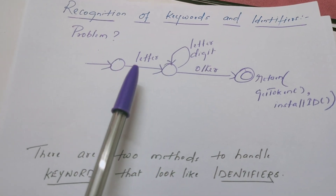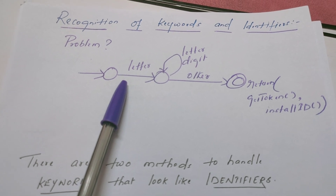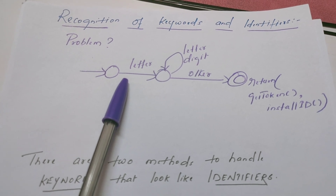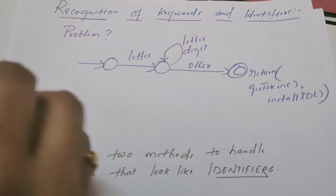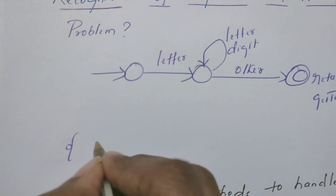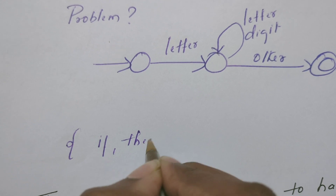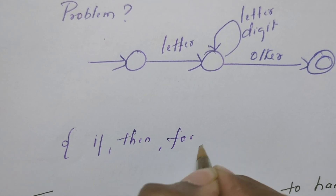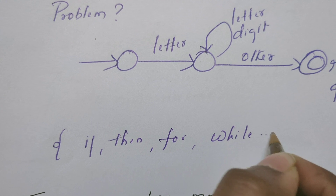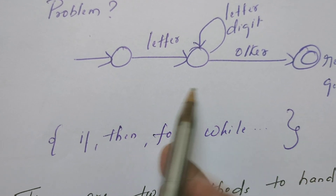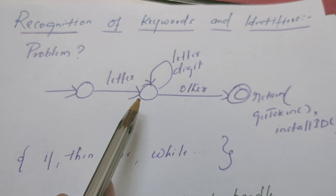But there is a problem with this transition diagram. This transition diagram not only recognizes identifiers, it also recognizes keywords. For example, if we have keywords like if, then, for, while — all these keywords can also be recognized by this transition diagram as an identifier.